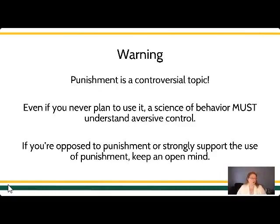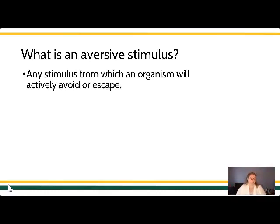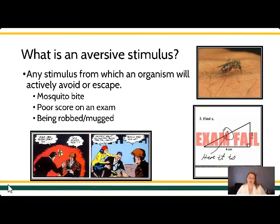Let's begin by talking about what we mean here. In aversive control, we are talking about a stimulus from which a person will actively escape or avoid — aversive stimuli are things that people will work to get away from. This could range from anything like a mosquito bite, which is incredibly itchy — so when the mosquito lands on you, you hit it, you kill it. Could be a poor score on an exam — you study so that you avoid getting that poor score. Could be getting robbed or getting mugged. Here's my one nod to Batman: you avoid things like dark alleys, places where you may experience predation from muggers or criminals, or you call campus police to get an escort to your car at night so that you're safe. We work to escape or avoid unpleasant stimuli.